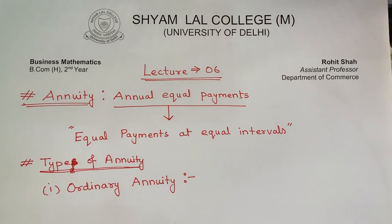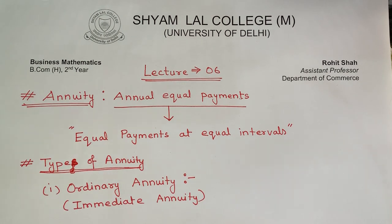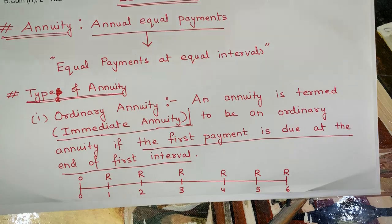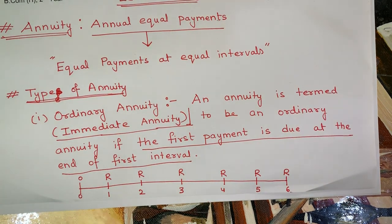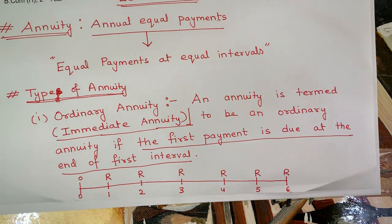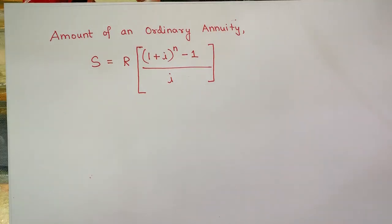The very first type of annuity is ordinary annuity, also known as immediate annuity. An annuity is termed to be an ordinary annuity if the first payment is due at the end of the first interval. If we make the timeline for an ordinary annuity, it would look something like this — you can see that the first payment is made at the end of the first year, and thereafter payments are made at equal intervals.